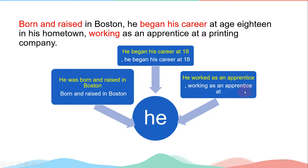這個句子是怎麼形成的？它原來是三個句子結合起來的。第一個句子：he was born and raised in Boston。第二個句子：he began his career at age 18。第三個句子：he worked as an apprentice。這三個句子的主詞都是 he，所以把主詞省略了。前面的 he was 省略掉，因為它是被動語態，所以留下 Born and raised，用分詞構句的方式。